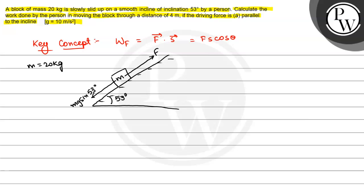Slowly slid up as we can see here. It means that F is equal to M G sin 53. That is equal to 20 multiplied by 10 multiplied by 4 by 5. So that will be equal to 160 Newton.